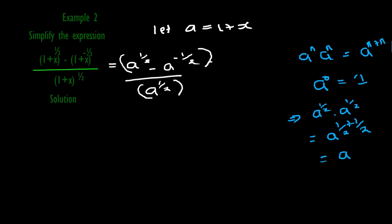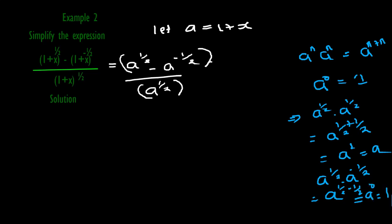So a raised to power half times a raised to power half — same base, add the powers — gives a raised to power 1, which is just a. And if you have a raised to power half times a raised to negative half, that is a raised to half minus half, you get a raised to zero, which is 1.